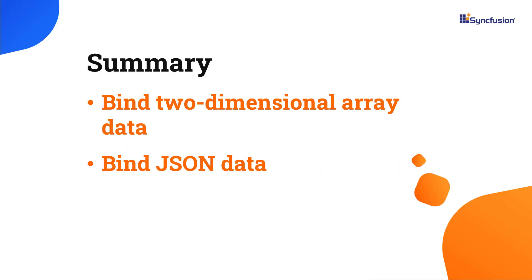In this video, you have seen how to bind array and JSON data to the heatmap chart component using the cell binding and row binding methods. If you would like to see the working example, you can download it from the GitHub link in the description below. I have also shared a link where you can learn about obtaining a free license key to use our React suite if you are eligible for our community license.